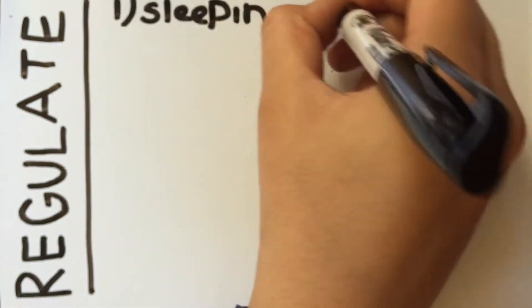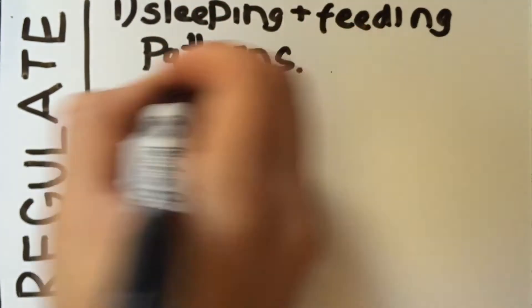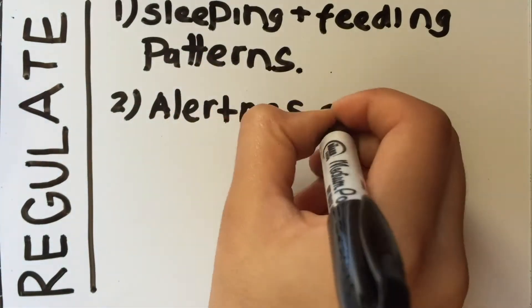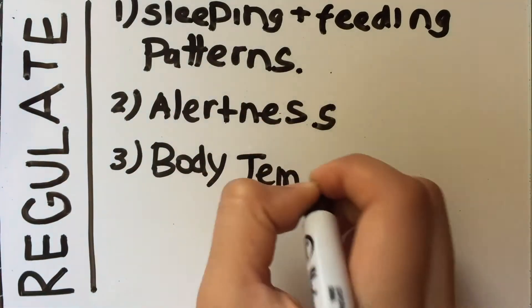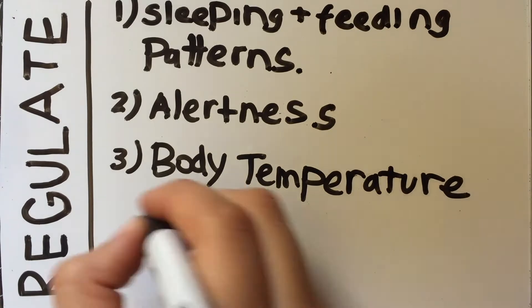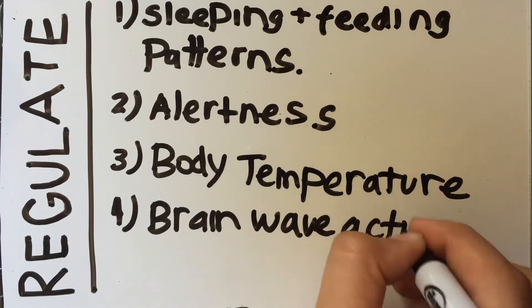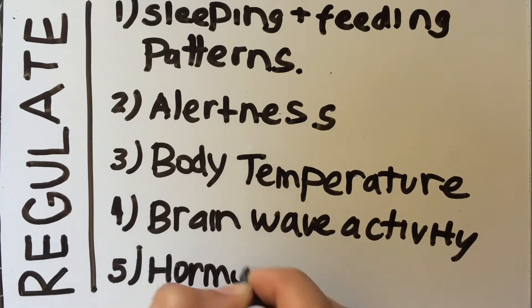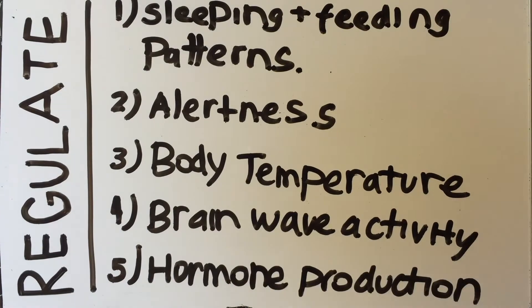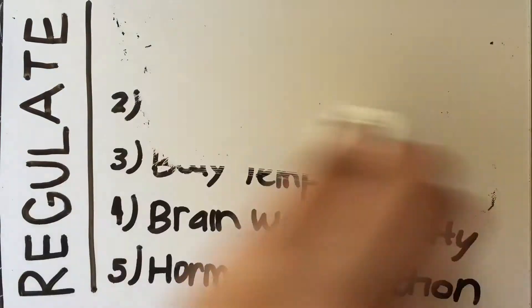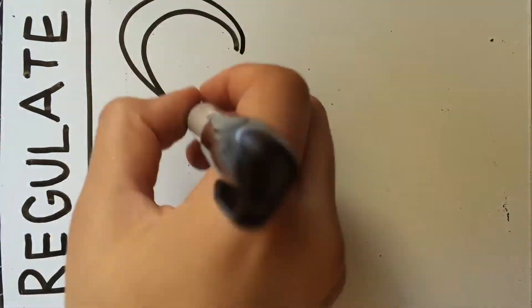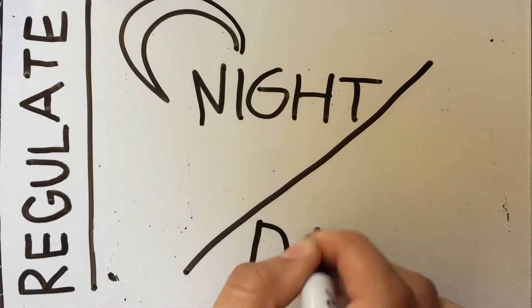The brain circadian clock regulates sleeping and feeding patterns, alertness, core body temperature, brainwave activity, hormone production, and many other biological activities related to our body's processing during night and daytime.